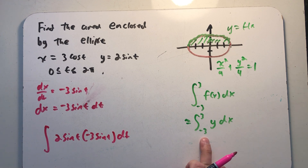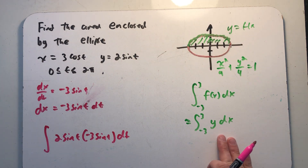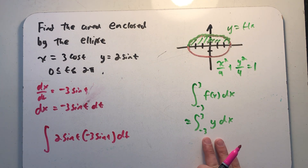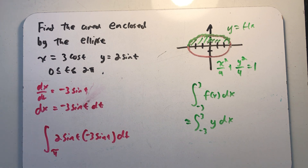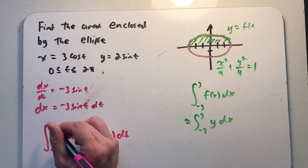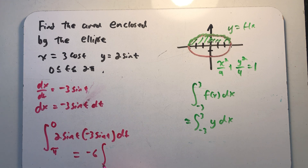Now from minus 3 to 3 is the natural way to integrate if working in x. So what value of t corresponds to x equals minus 3? That would be t equals π, since cosine π equals minus 1. For x equals 3, plugging in gives t equals 0. So I have a coefficient of minus 3 times 2 equals minus 6, and the integral runs from π to 0.